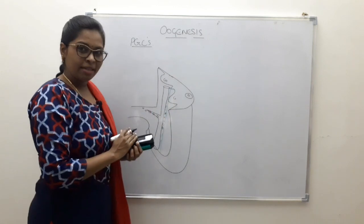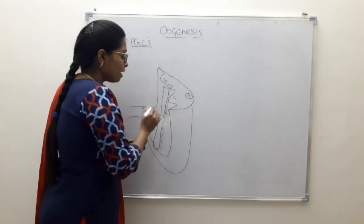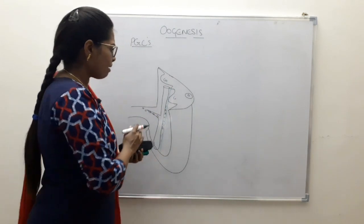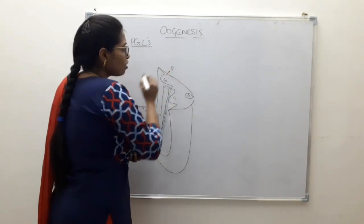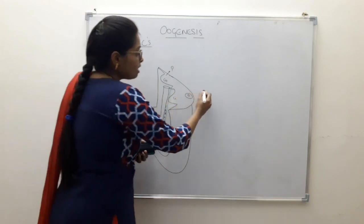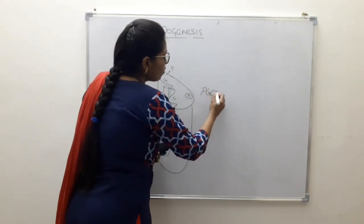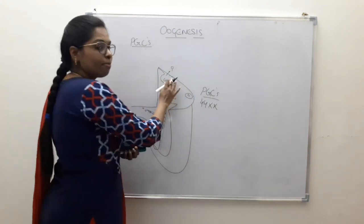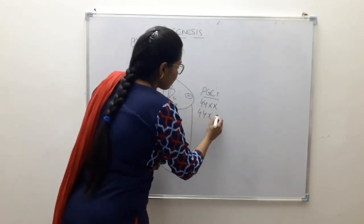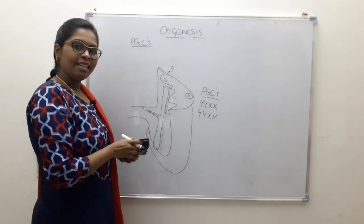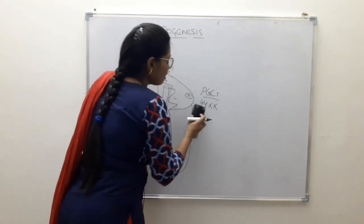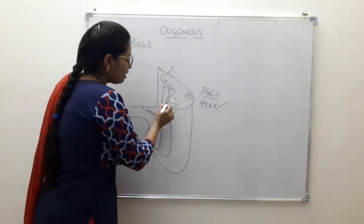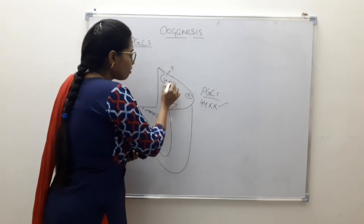They travel through the dorsal mesentery, undergoing repeated mitotic divisions as they ascend. The fate of the gonad — whether it develops into a testis or ovary — depends upon the chromosomal complement of the primordial germ cells. If the complement is 44+XX, the gonad develops into an ovary; if 44+XY, it develops into a testis. Since we are discussing oogenesis, the chromosomal complement will be 44+XX, and they reach the developing gonad by around the fifth week.